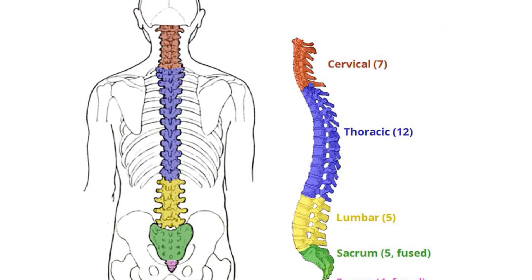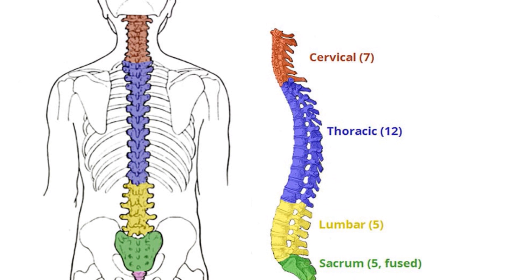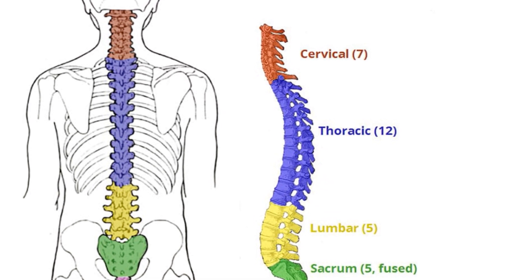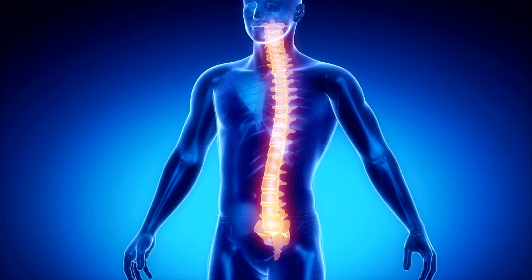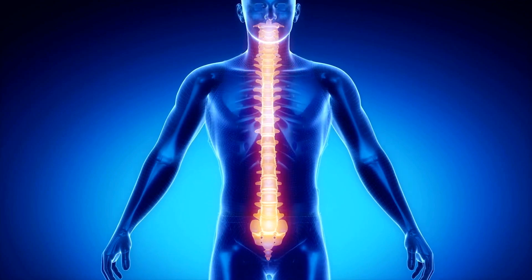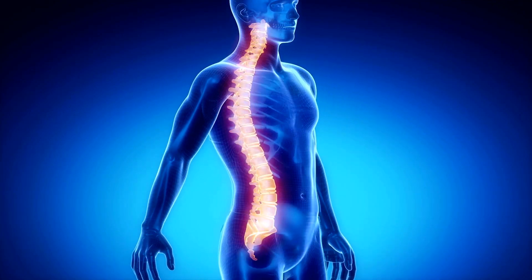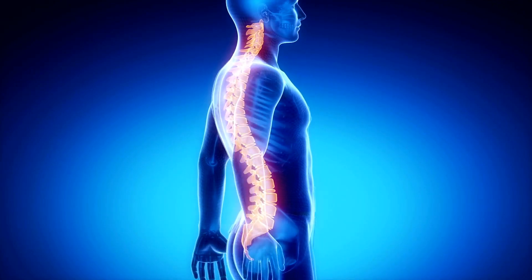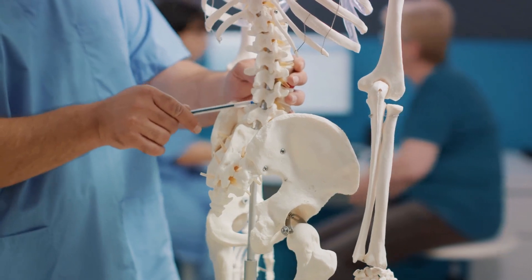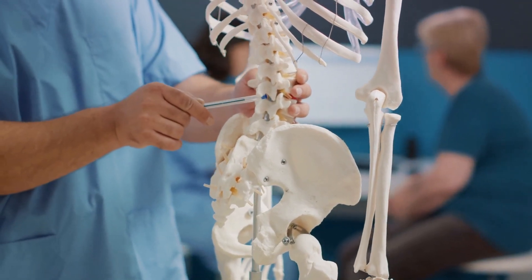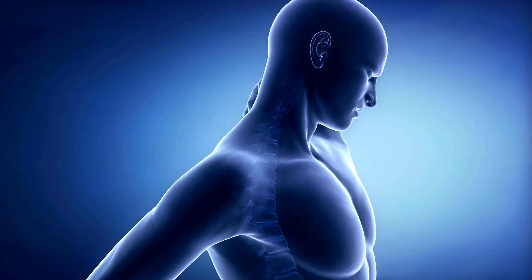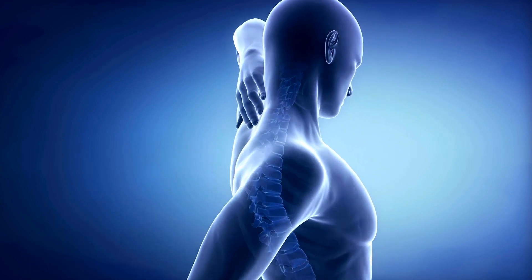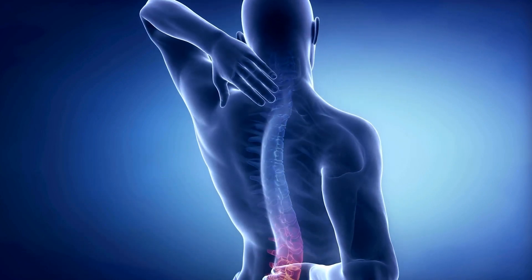Not all vertebrae are created equal. We have five types of vertebrae: cervical, thoracic, lumbar, sacral, and caudal. Each type has a unique structure and function, allowing for different types of movement and support throughout the body. Interestingly, the number of caudal vertebrae varies from one animal to another depending on the size of the tail. Humans, for instance, have only three to five caudal vertebrae, fused together to form the coccyx or tailbone.